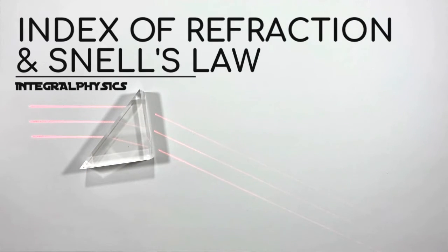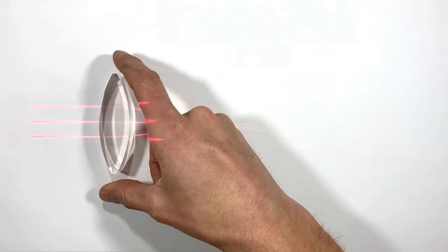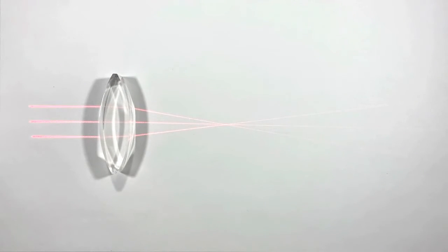Why does a light ray appear to bend when it passes from air into glass? And why does a magnifying glass focus sunlight onto a bug?